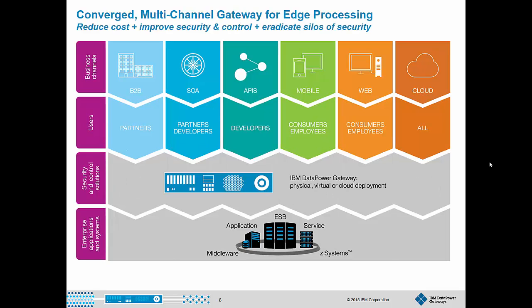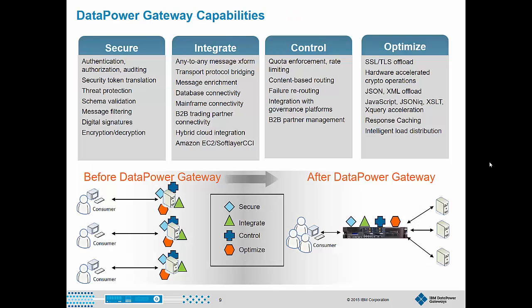The ideal security and integration gateway for the multi-channel enterprise should be able to help secure, control, integrate, and optimize workloads across all the different business channels using a consistent policy-based approach. The IBM DataPower Gateway provides an integrated set of capabilities designed to help ease the process of becoming an extended enterprise. And because DataPower is usually the first point of entry and egress for data moving in and out of your enterprise, it's ideally positioned to gather essential information to feed your big data and analytic systems.